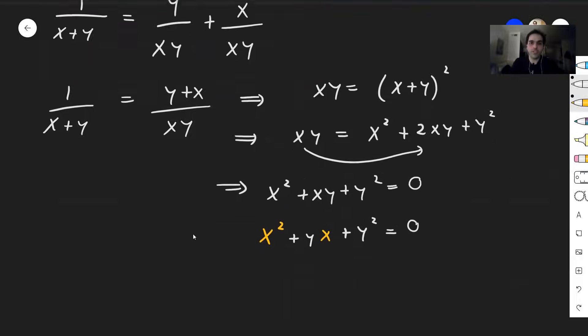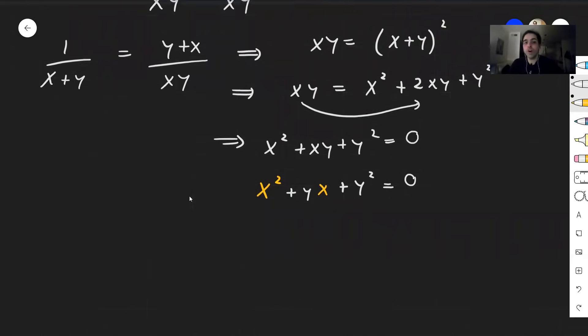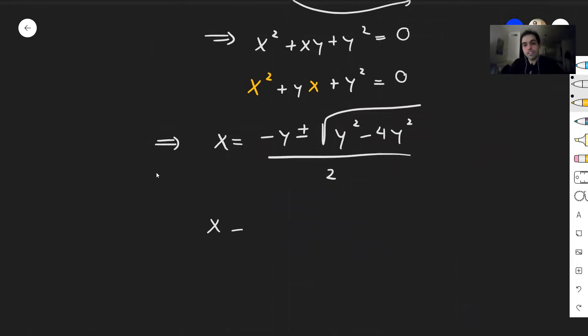So using the quadratic formula, we can actually solve for x in terms of y, because x becomes minus b, so minus y, plus or minus square root of y squared minus 4 times 1 times y squared over 2a over 2. And so x becomes minus y plus or minus square root of minus 3y squared over 2.